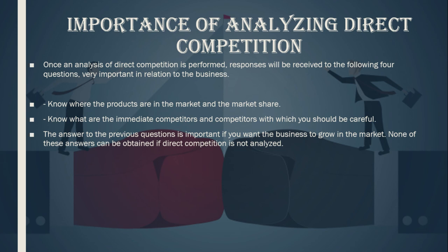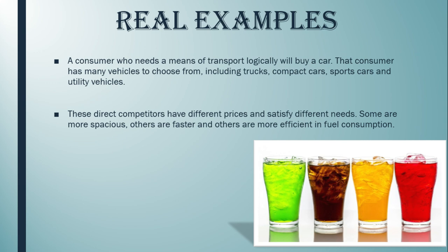A real example: a consumer who needs a means of transport will logically consider buying a car. That consumer has many vehicles to choose from, including trucks, company cars, sports cars, and utility vehicles. These direct competitors have different prices and satisfy different needs — some are more spacious, others are faster, and others are more fuel efficient.